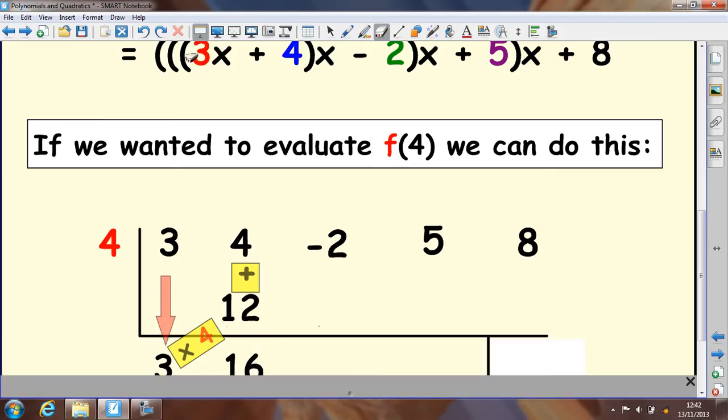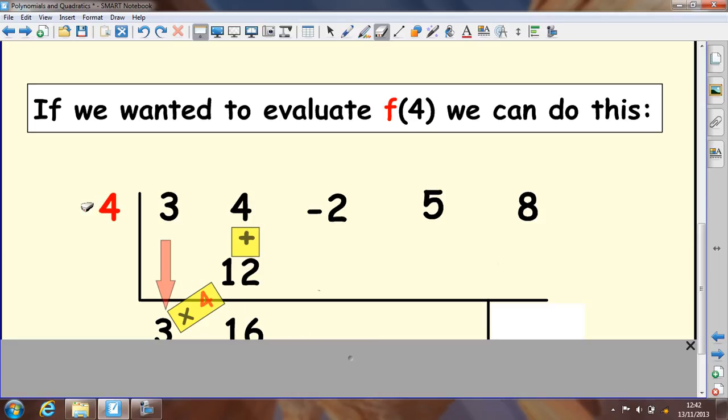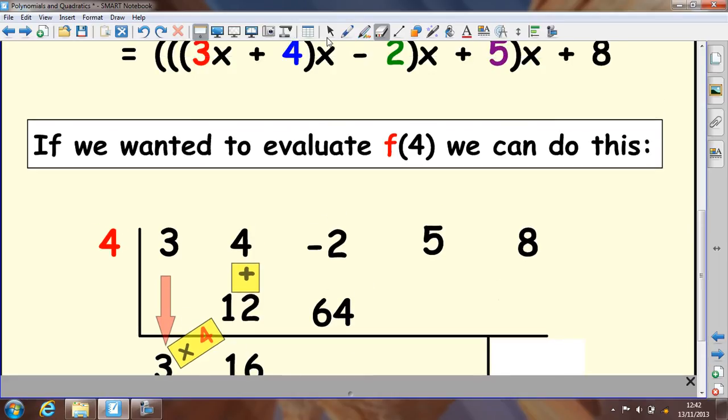You would multiply all of that by x, which is 4. So, you multiply this by 4 and you get 64. If we're looking up here, then you take away 2 or add on -2. So, you would add these two together and you would get 62.